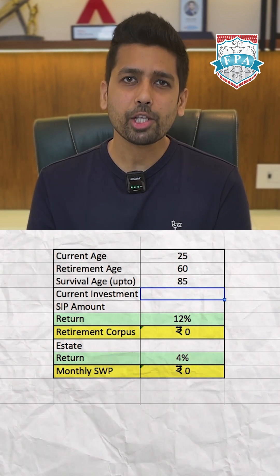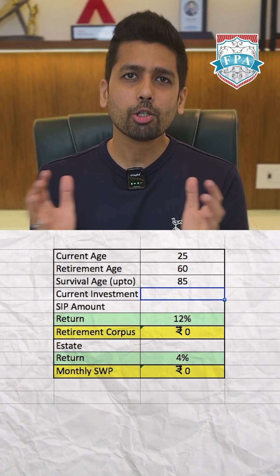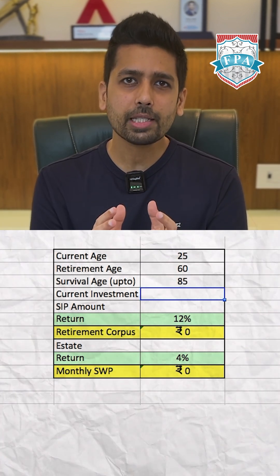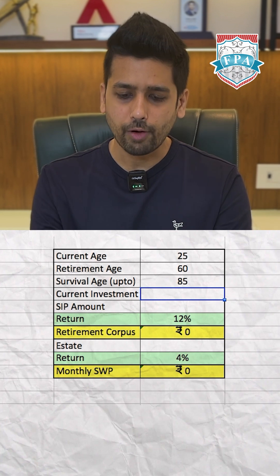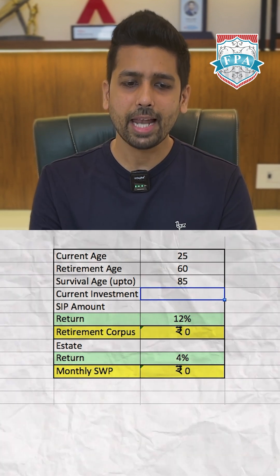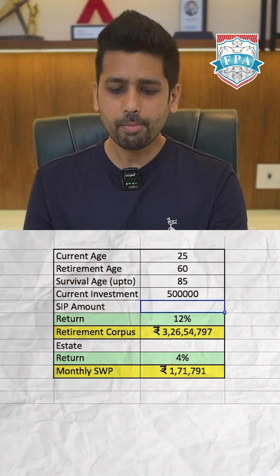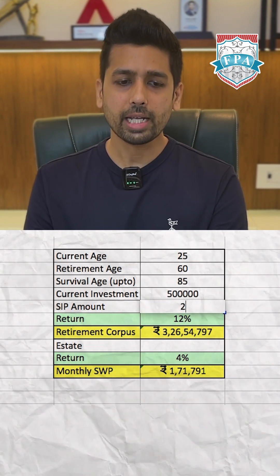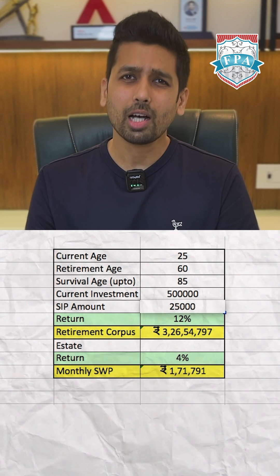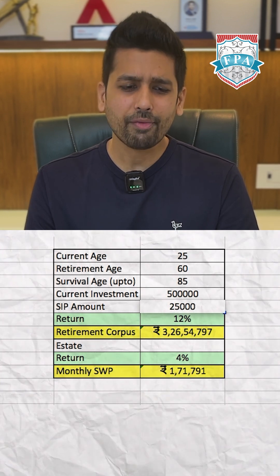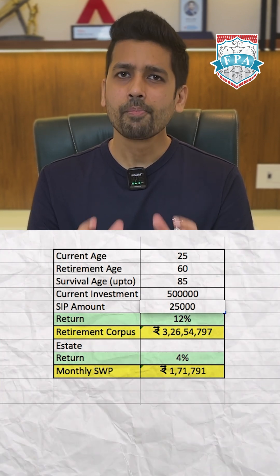Here is where you mention the accumulated investments that you have so far. Let's say that value is 5 lakhs, and then mention your SIP amount — assume 25,000 a month.